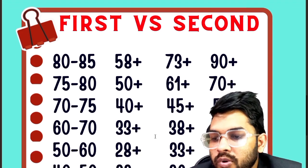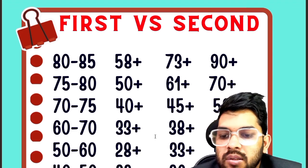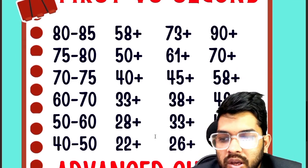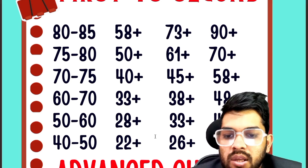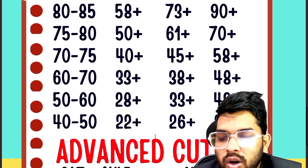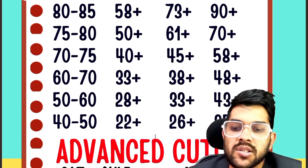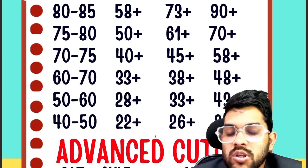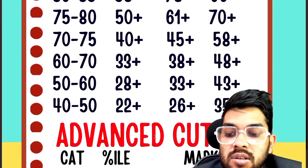For 60 percentile, 33, 38, and 48 marks; for 50 percentile, 28, 33, and 43; for 40 percentile, 22, 26, and 35 marks is required. This covers the marks versus percentile data for the second attempt.